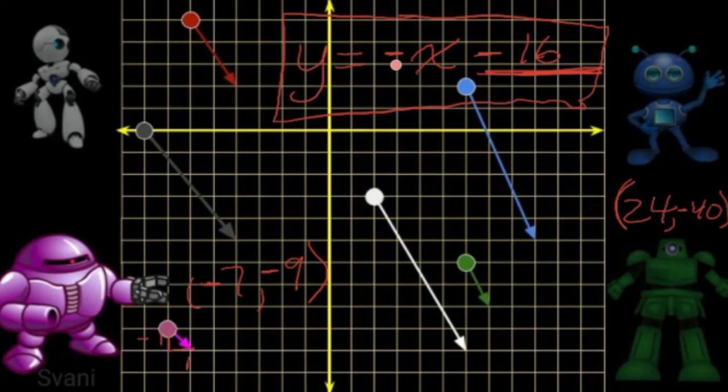When x is 24, negative 24 minus 16, negative 40 for sure. So that's in.